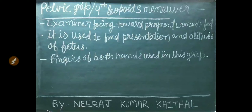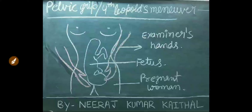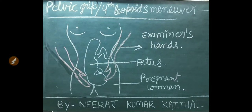In the last — the fourth Leopold's manoeuvre — also called pelvic grip, the examiner faces towards the pregnant woman's feet. Remember, this is the only Leopold's manoeuvre in which the examiner faces the patient's feet. It is used to find the presentation and attitude of the fetus. The fingers of both hands are used in this grip. In the diagram, the pregnant woman is lying on the bed and the examiner is standing at the head side of the woman, facing her feet, palpating the pelvic part with the fingers of both hands.